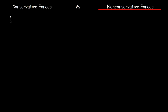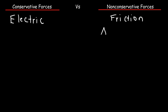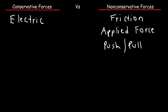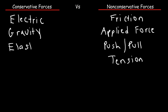The electric force between charges is a conservative force. Friction is a non-conservative force. Any applied force — whether the force is to accelerate or decelerate the object — that's a non-conservative force. Applied forces include any push or pull action. So if you push a box, that force is non-conservative, or if you pull it with a rope through tension, that's also non-conservative. Gravity is a conservative force. The elastic force in a spring is also conservative.